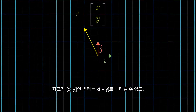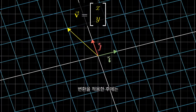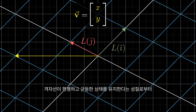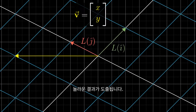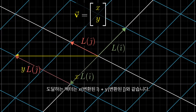A vector with coordinates x, y is x times i-hat plus y times j-hat. After going through the transformation, the property that grid lines remain parallel and evenly spaced has a wonderful consequence: the place where your vector lands will be x times the transformed version of i-hat plus y times the transformed version of j-hat.